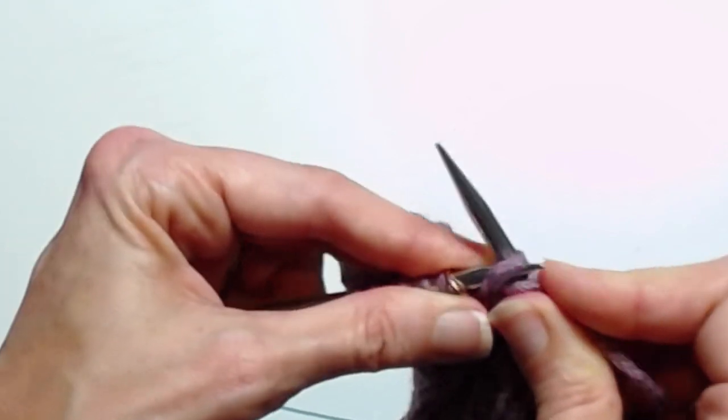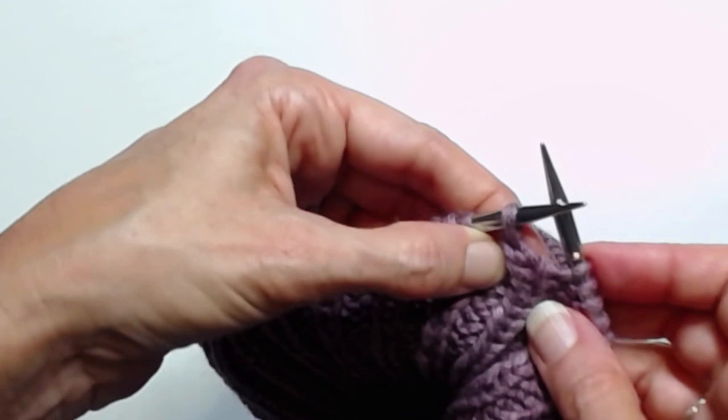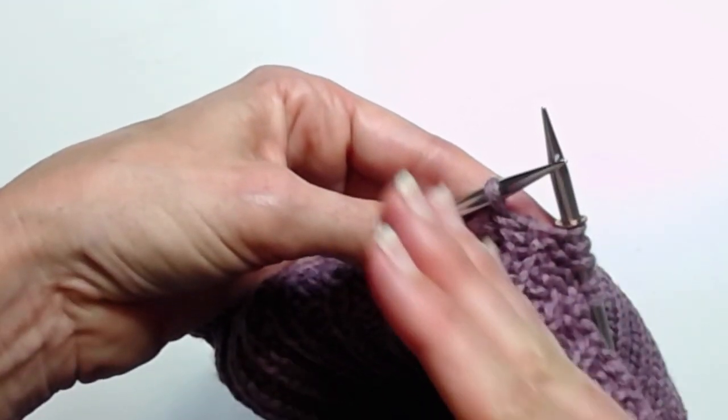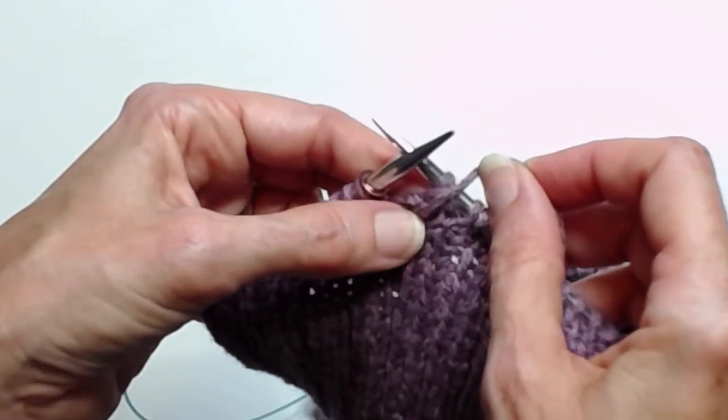And then I have to purl them together. When I turn around, let's take a look and you can see what that makes is a left slanting decrease on the public side. So when you're looking at it this way it doesn't look like much.